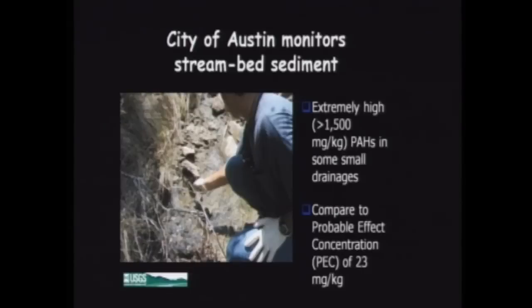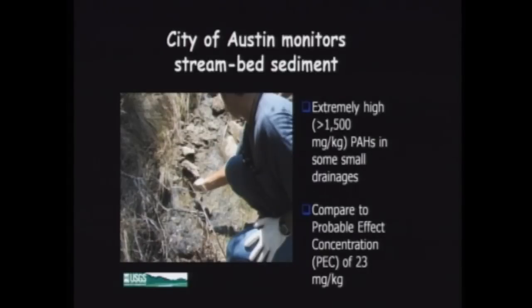About the same time, local work we were doing with the city of Austin led them to bring us data on PAHs that really surprised us. They had collected streambed samples from little, tiny tributaries — drainage ditches, really — in mostly residential areas draining housing developments and multifamily housing areas. They had very high concentrations of PAHs, higher than anything we'd measured in any urban lake, including the Charles River in Boston. So the most contaminated sediments we'd seen were not as contaminated as these little urban drainages.